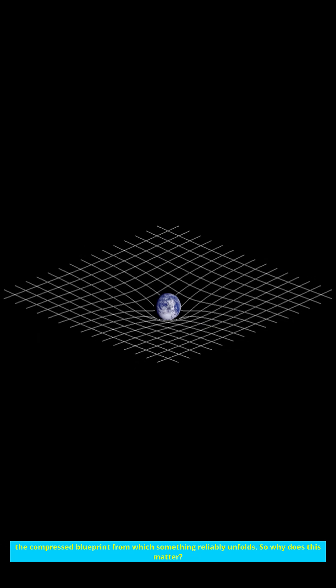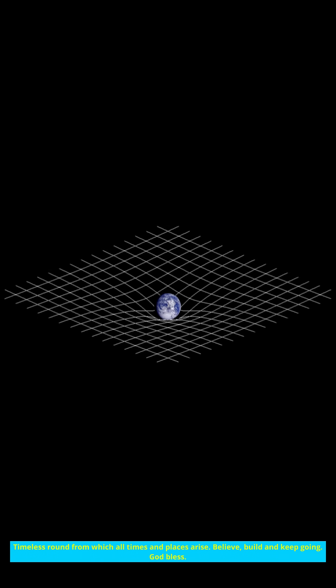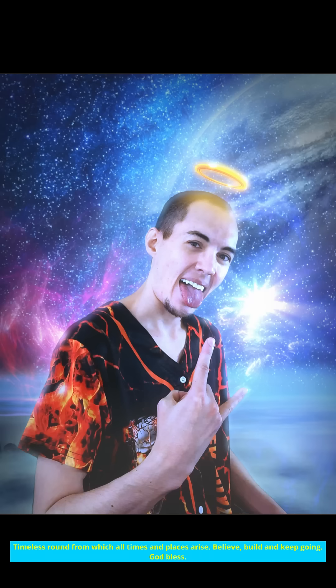So why does this matter? Because a universe with a meaningful origin frame is not accidental chaos, it's authored order. D zero explains why reality computes, why equations travel well, and why intelligence can discover truth at all. If there is a fundamental source, D zero is its signature, the singular, timeless ground from which all times and places arise.